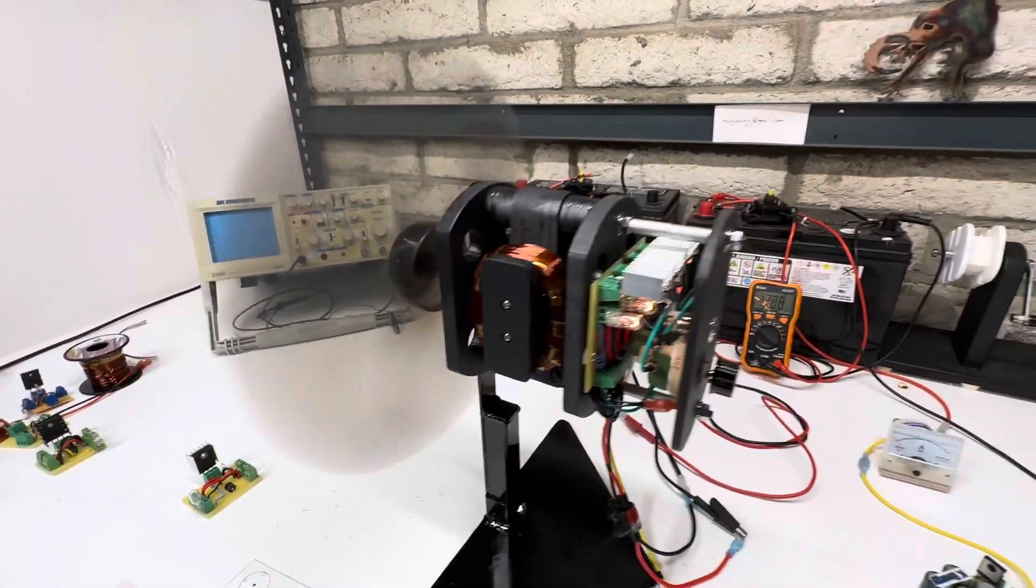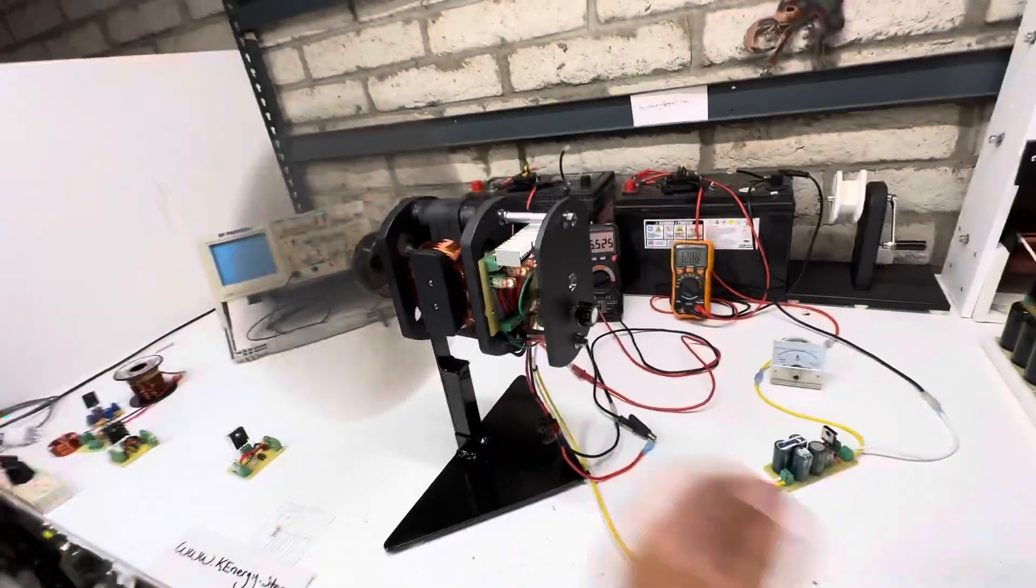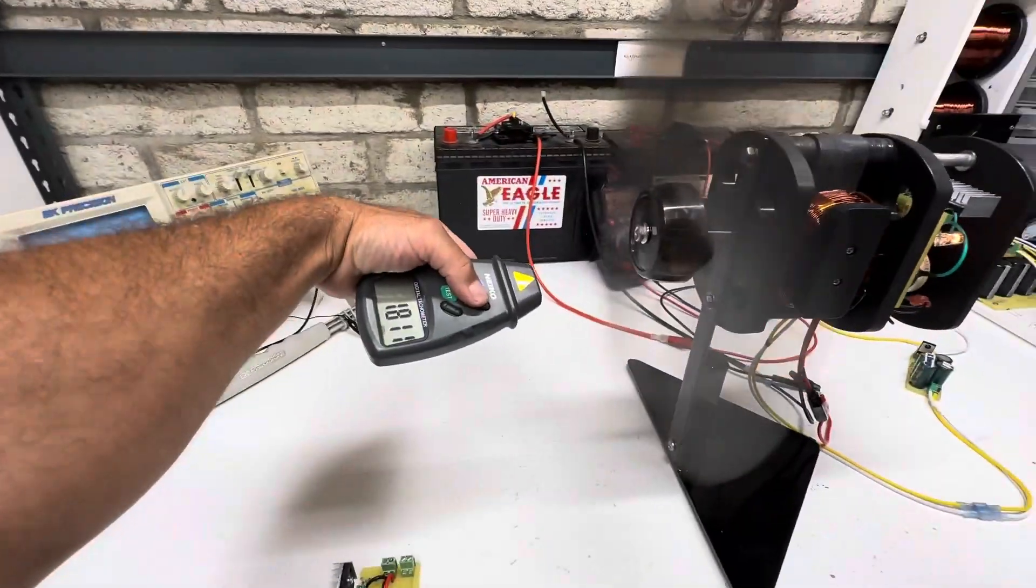So when you're at full speed, the lights are glowing. It's full power, 5.5 amps. Very, very strong.